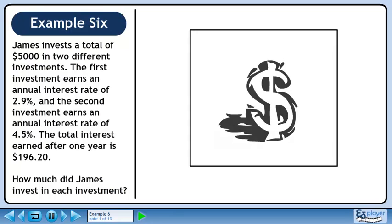James invests a total of $5,000 in two different investments. The first investment earns an annual interest rate of 2.9%, and the second investment earns an annual interest rate of 4.5%. The total interest earned after one year is $196.20. How much did James invest in each investment?